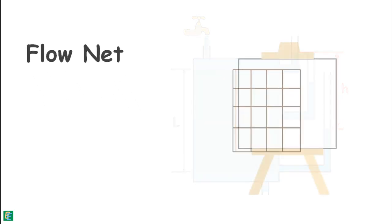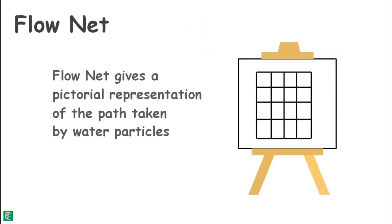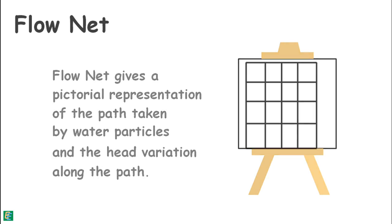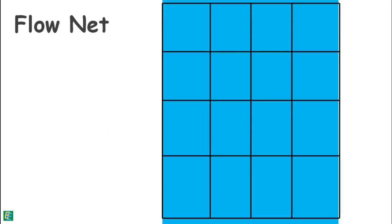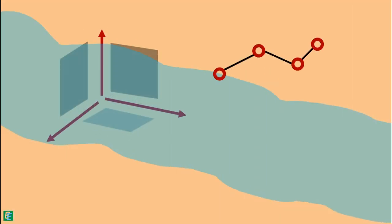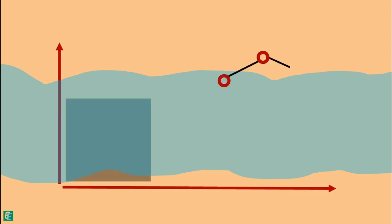A flow net gives a pictorial representation of the path taken by water particles and the head variation along the path. This is a simple flow net for unidirectional flow in soil. For multidimensional flow, the flow net may be very complex. Generally, the flow of water in soil is three-dimensional, and analysis of such flow is too complex, so we simplify the situation to two-dimensional flow and analyze accordingly.